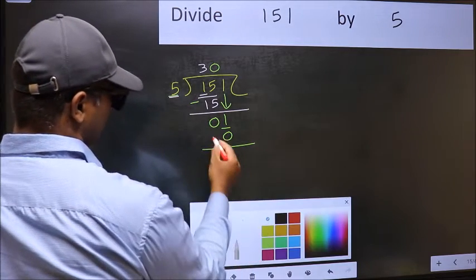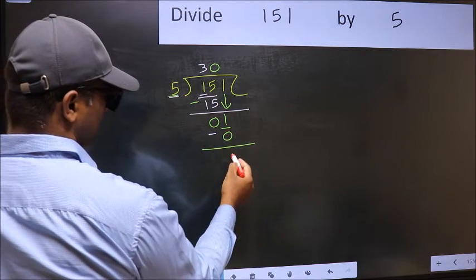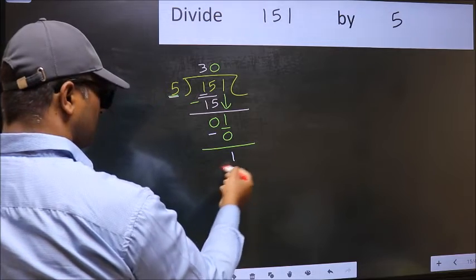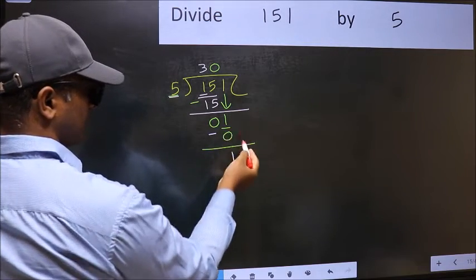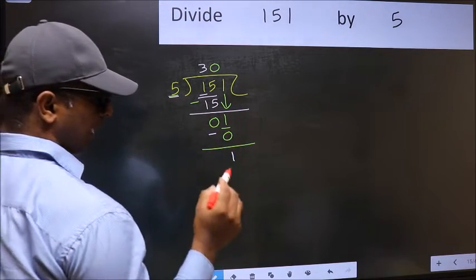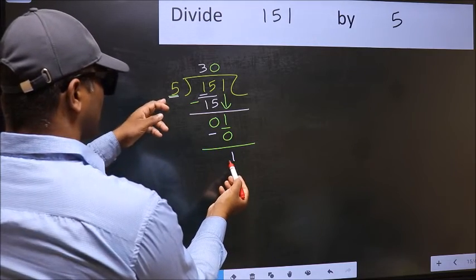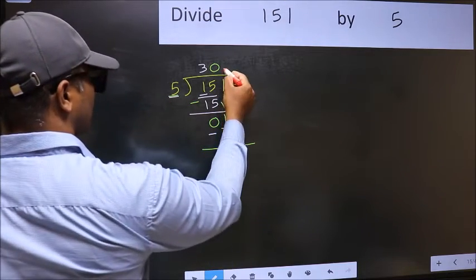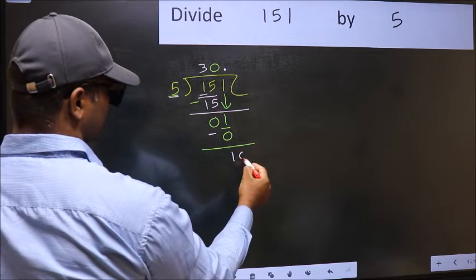Now you should subtract. 1 minus 0, 1. Over here, we did not bring any number down, and 1 is smaller than 5. So now you can put dot and take 0.